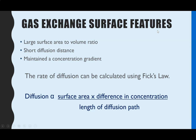To recap, every gas exchange surface — whether it's gills in fish, spiracles in insects, or the lungs and alveoli in mammals — must have a large surface area to volume ratio, a short diffusion distance, and a mechanism to maintain concentration gradients. The rate of diffusion can be calculated using Fick's Law, where diffusion is proportional to the surface area times the difference in concentration, divided by the length of the diffusion path.